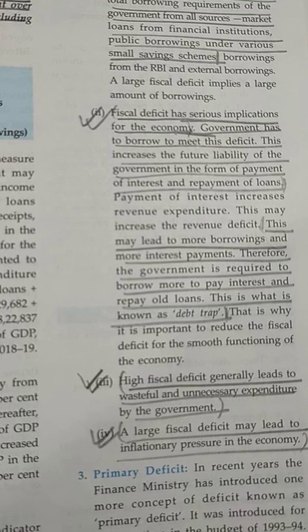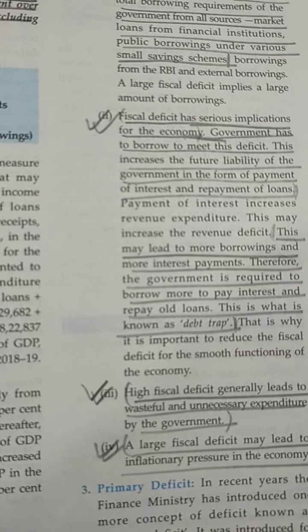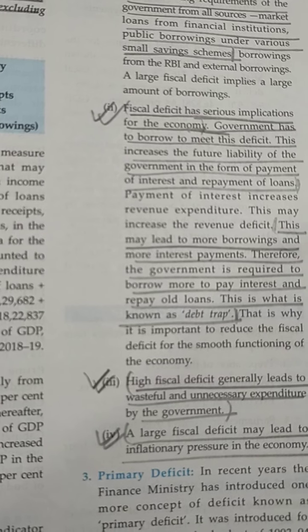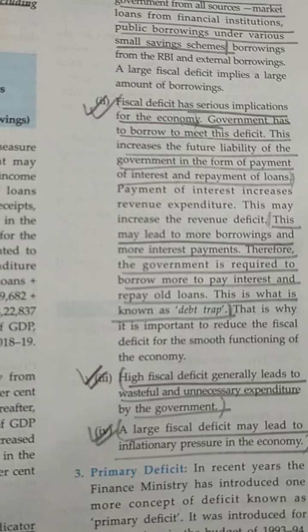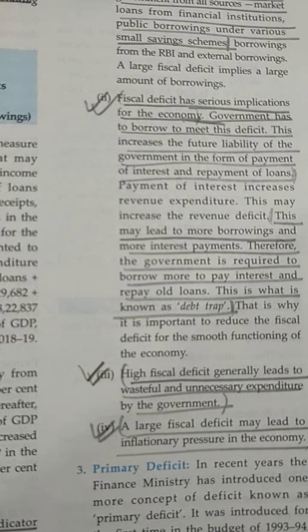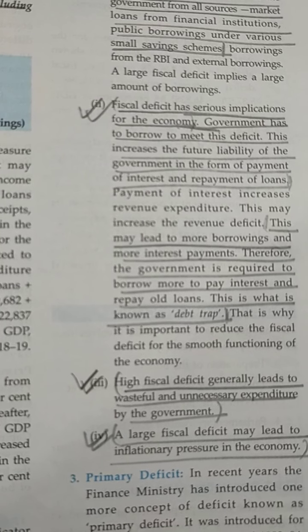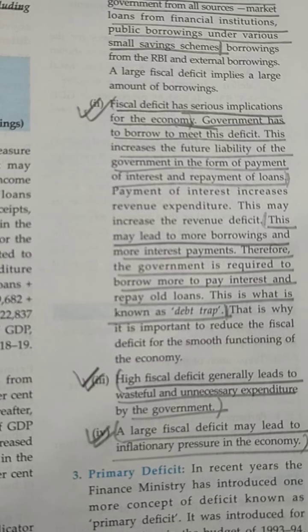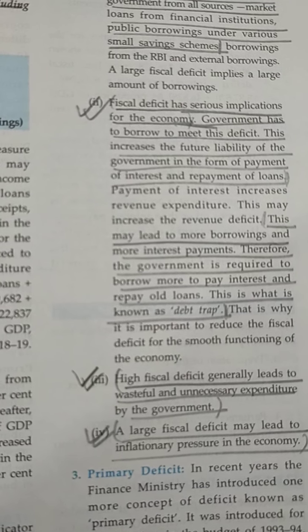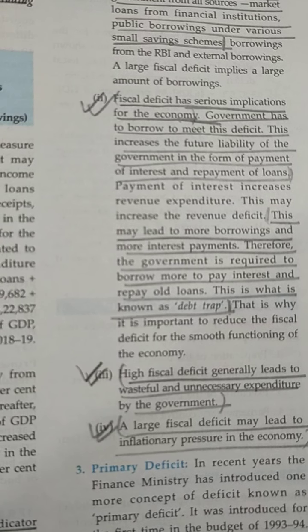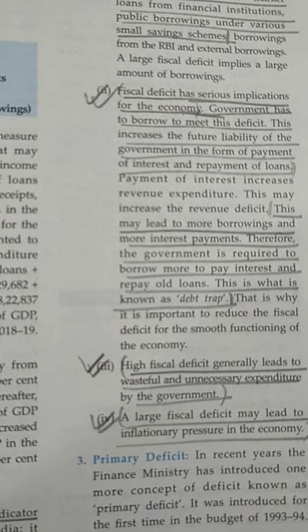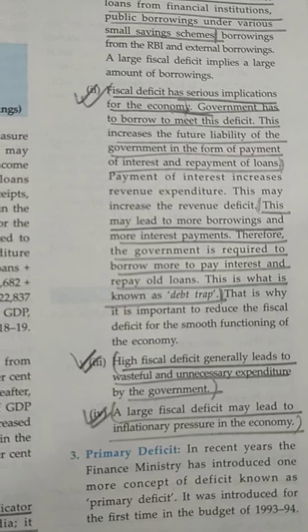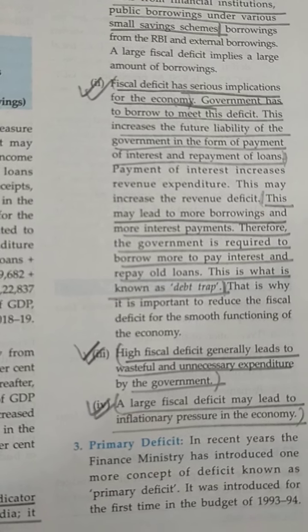Government has to borrow to meet this deficit, which increases its liability towards interest payments, because loans carry an interest rate that makes repayment very difficult. This may lead to more borrowing and more interest payments — the government will take fresh loans to pay off previous loans, creating a debt trap. Higher fiscal deficit also leads to unnecessary expenditure.